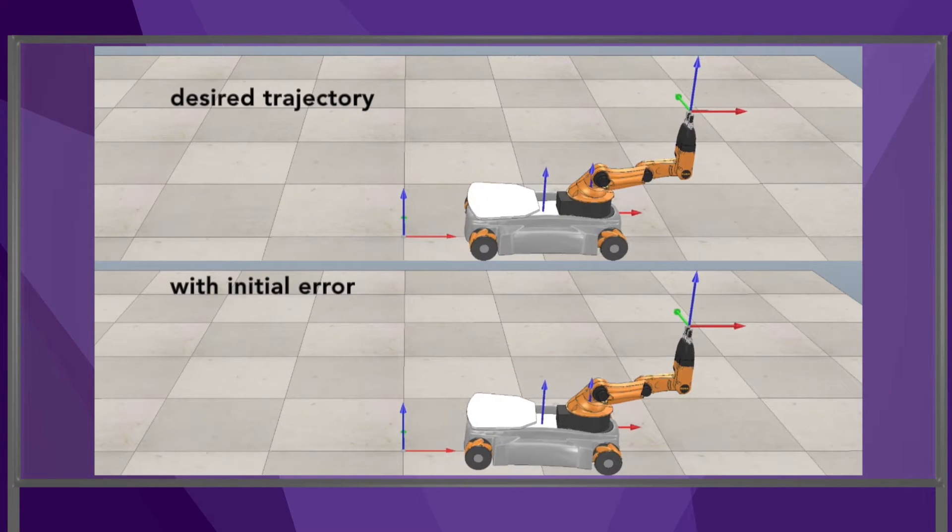At the end of the motion, note that the mobile bases are at different configurations, but the purpose of the controller is only to track the planned end effector trajectory.